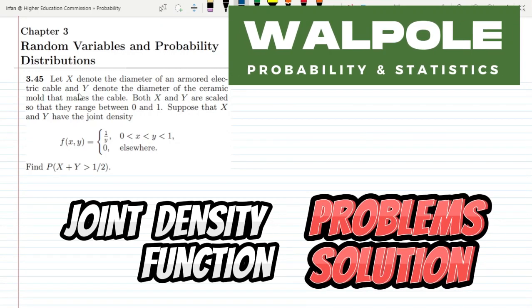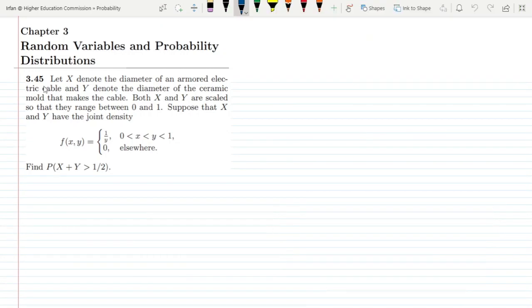Welcome back guys, I hope all of you will be fine. This is question 3.45 and the statement is: let X denote the diameter of an armored electric cable and Y denote the diameter of the ceramic mold that makes the cable.